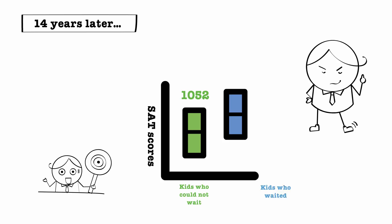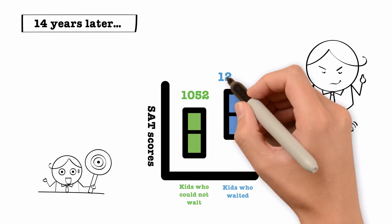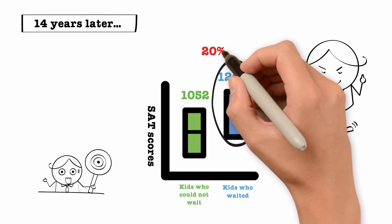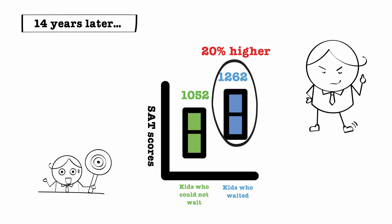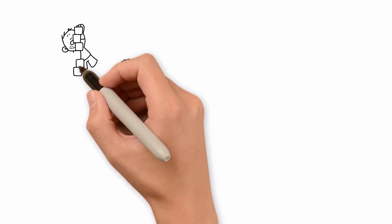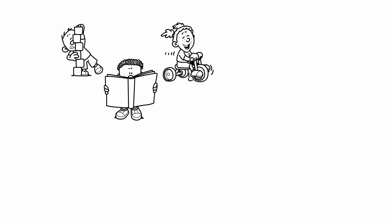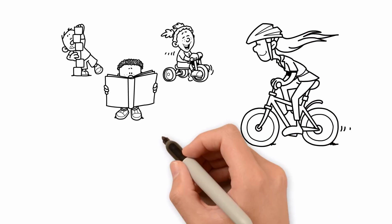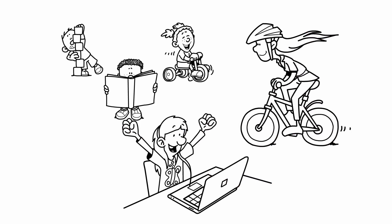While the kids who waited for the second marshmallow had an average SAT score of 1262, almost 20% higher than the kids who couldn't wait. And not only that, these kids were more socially competent, could handle pressure better, and embrace challenges in life.